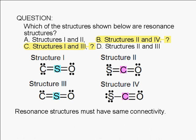We can rule out choice A. Structures 1 and 2 cannot be resonant structures. The atoms are connected differently. We can also rule out choice D. Structures 2 and 3 have different connectivities.